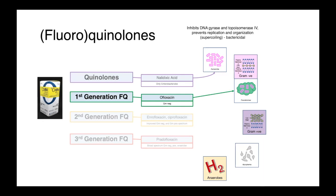Our first-generation fluoroquinolones have chemical modifications where a fluorine atom was added to the molecule, greatly expanding their spectrum of activity and also improving pharmacokinetic properties. Drugs like ofloxacin are examples of first-generation fluoroquinolones, which had greatly improved anti-gram negative activity, including Pseudomonas aeruginosa. First-generation fluoroquinolones are now still used primarily for treating eye infections, with ophthalmic topical preparations like ofloxacin commonly seen in practice.